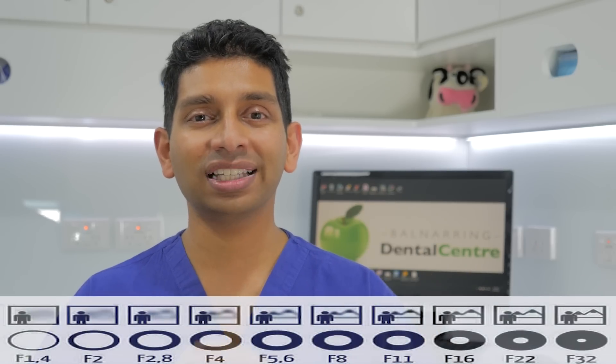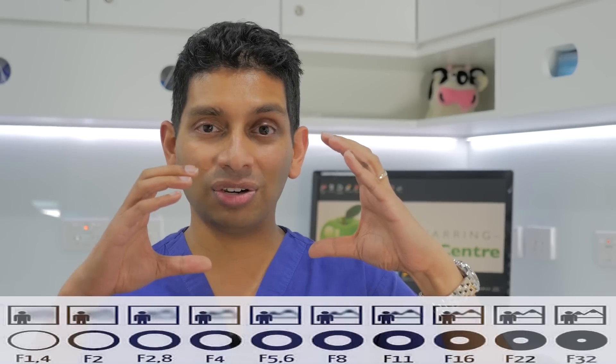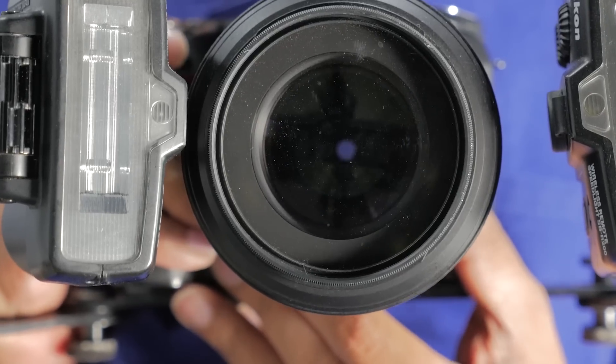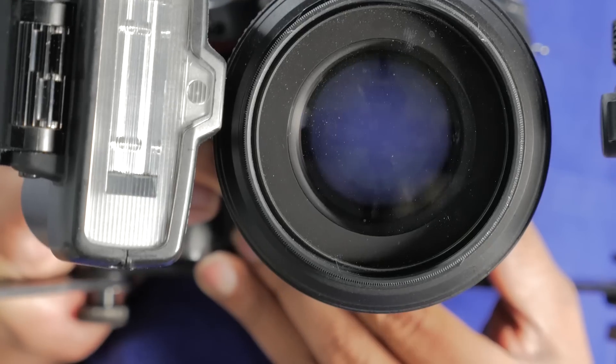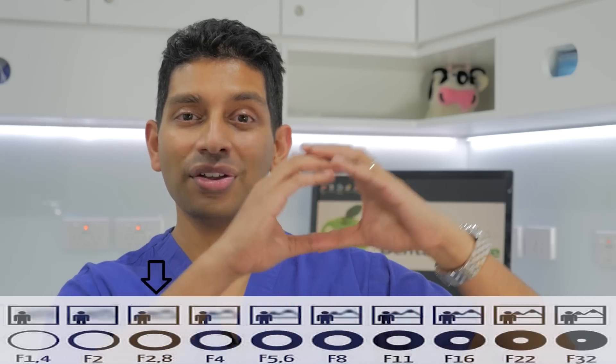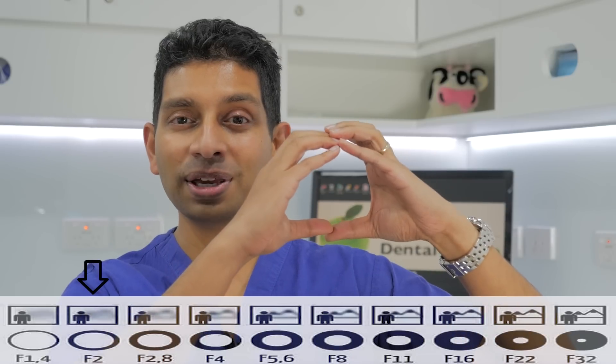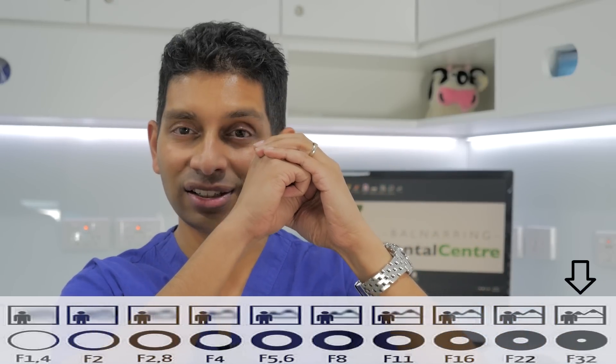The third thing is aperture — basically the amount of light the lens lets into the sensor. Not how long it lets light in (that's shutter speed), but how much at any one time. The f-stop number describes aperture, and it's a ratio: confusingly, the smaller the number, the bigger the opening. An f-stop of 2 is a big opening; an f-stop of 30 is a tiny hole. So for dental photography, you might think — keep the aperture large to let lots of light in.